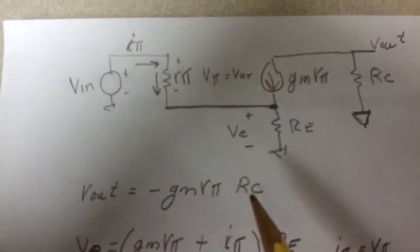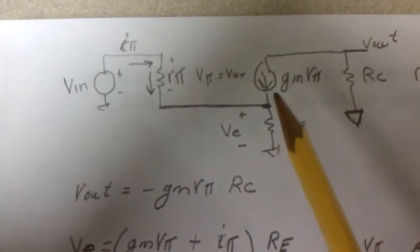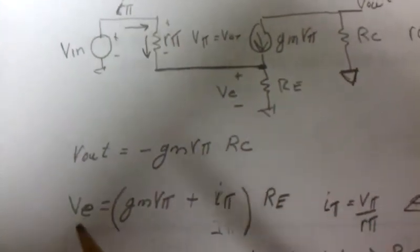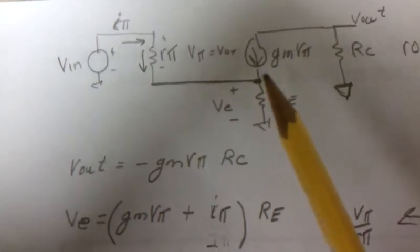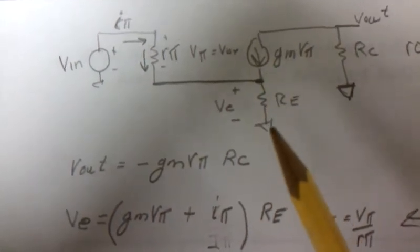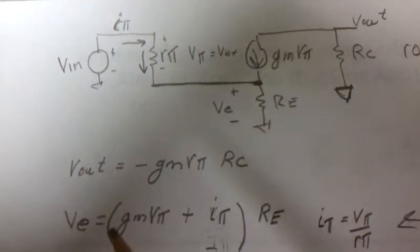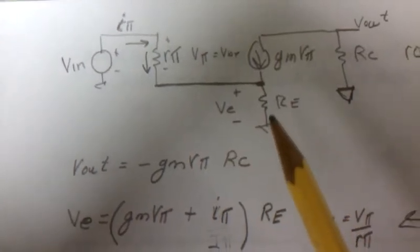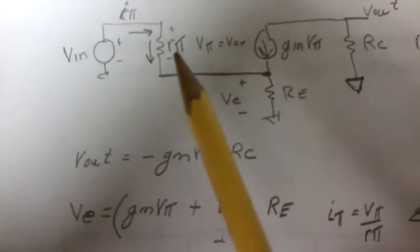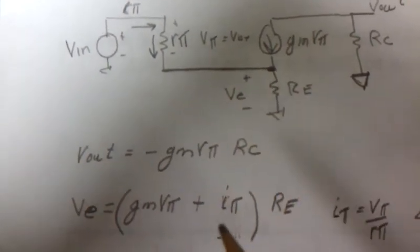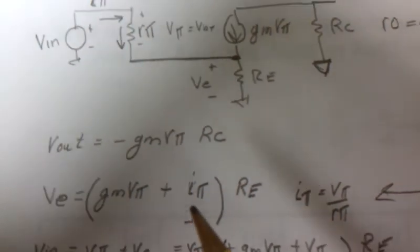Now we need an equation for the emitter voltage drop, the voltage drop across RE. So that VE was GM V pi plus I pi or IB coming in.